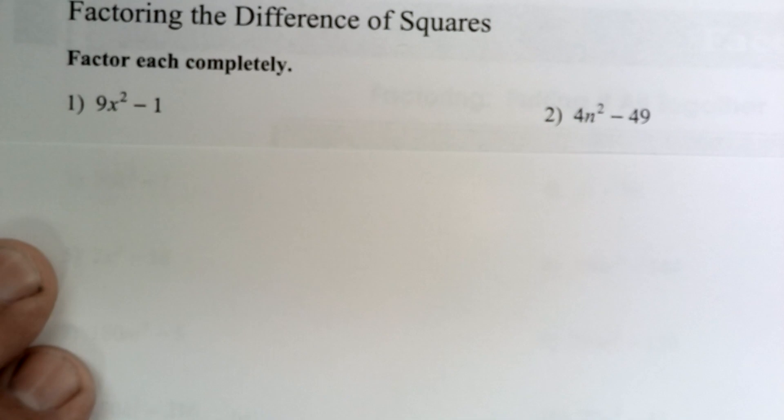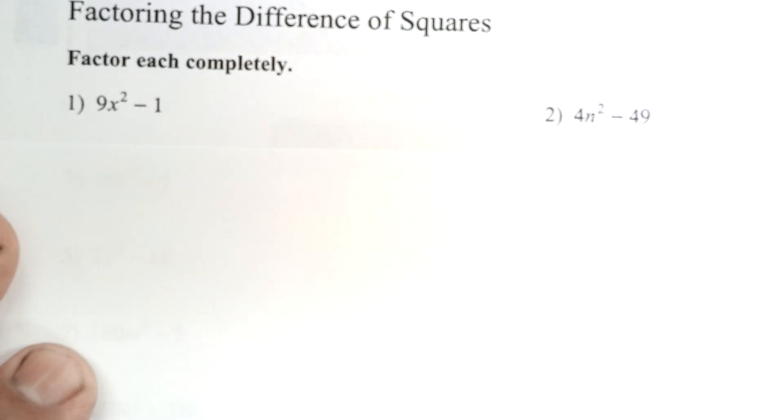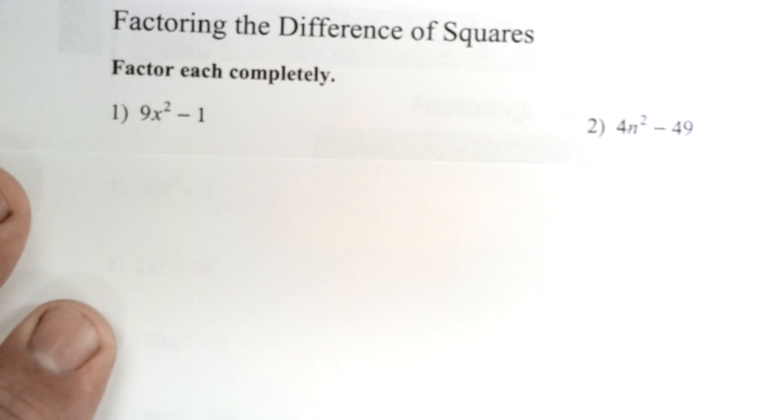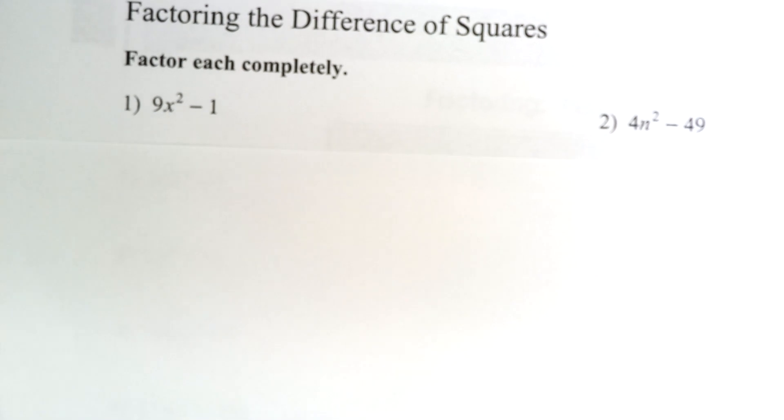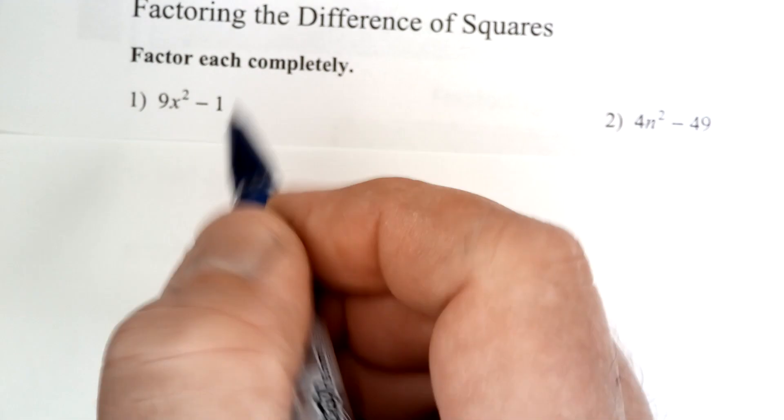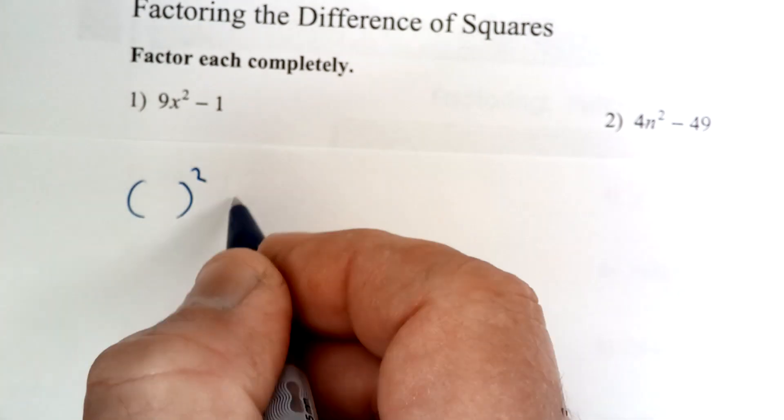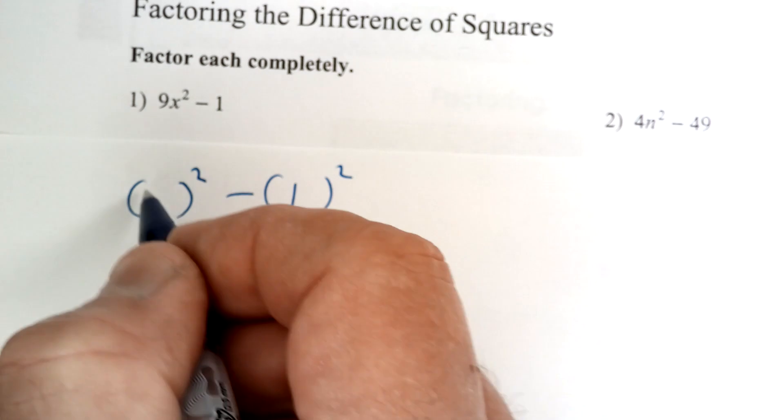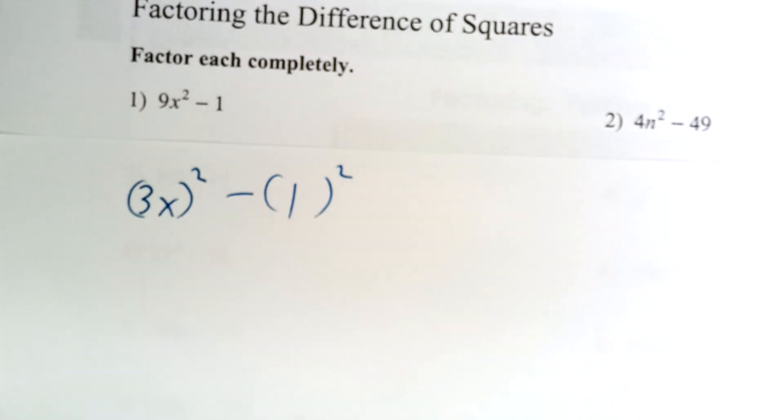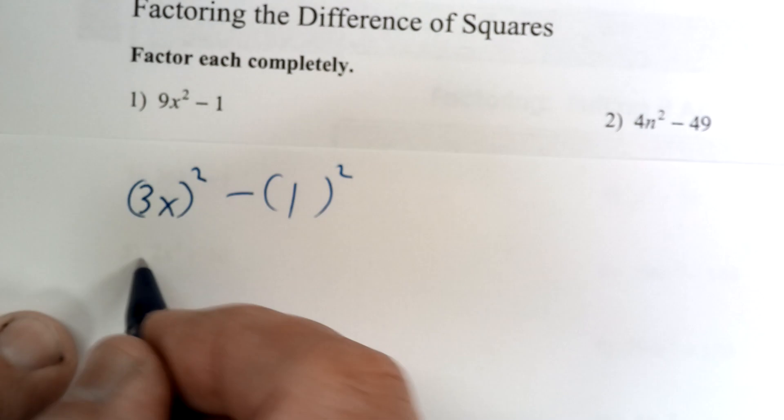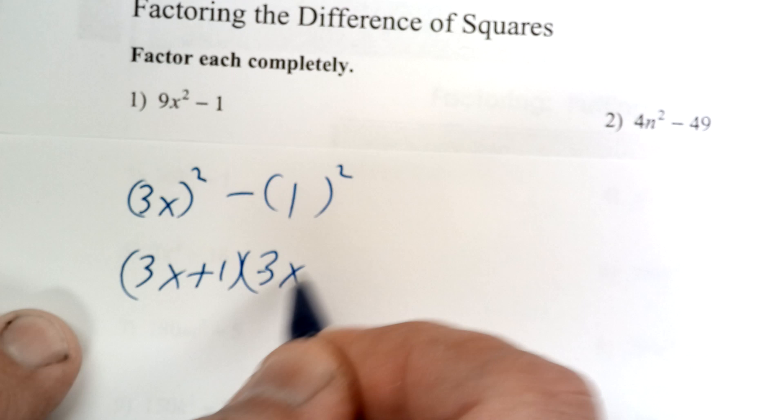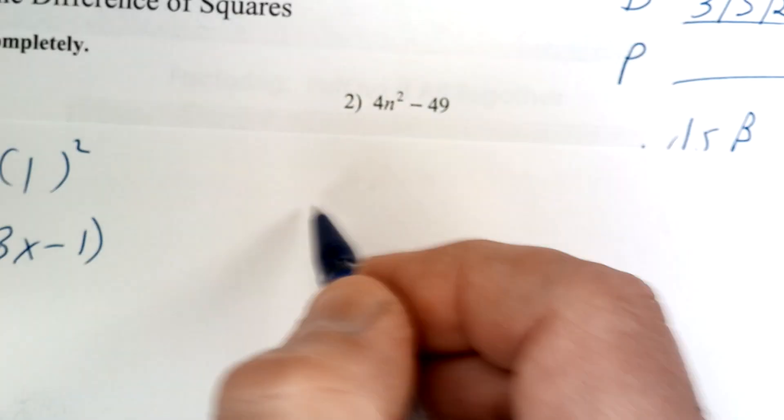To do the difference of two squares, the difference of two squares has two terms. You see what square minus what square. Well, 1 times 1 is 1, that's a perfect square, and 3 times 3 is 9. So it's called the difference of two squares. This is going to be (3x + 1) and (3x - 1).